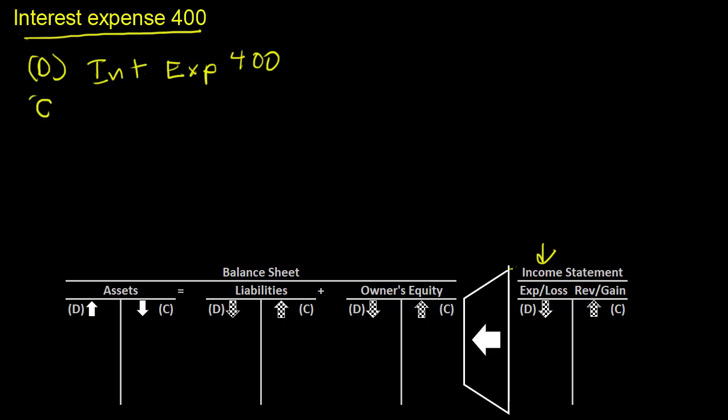And our credit can be one of two things. It could be a credit to cash if we're going to pay in cash right then. The thing about interest is you're always experiencing it.